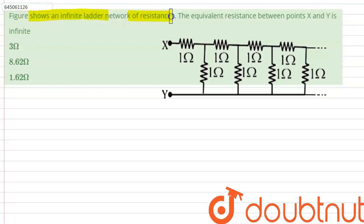The equivalent resistance between points x and y is... So the question is asking us to find out the equivalent resistance between the points x and y if this ladder is infinite.